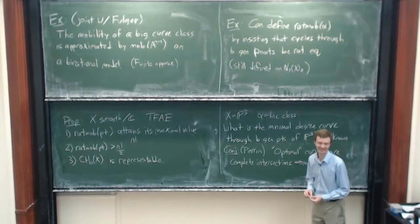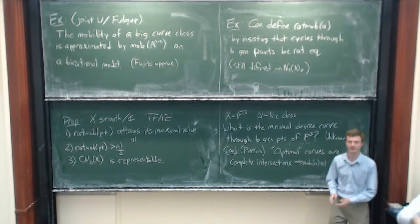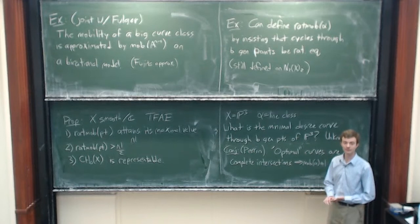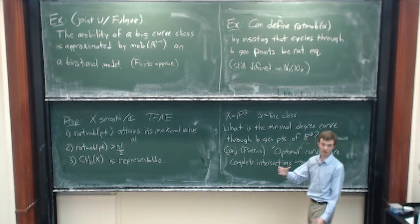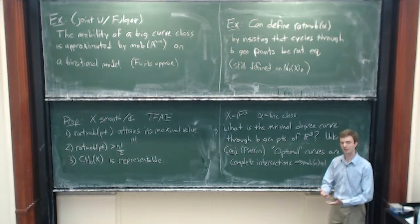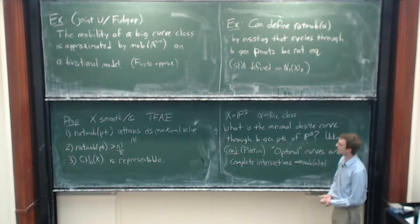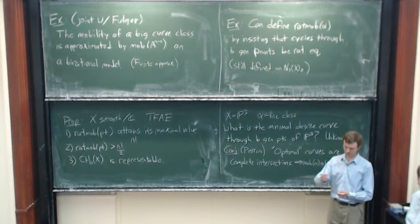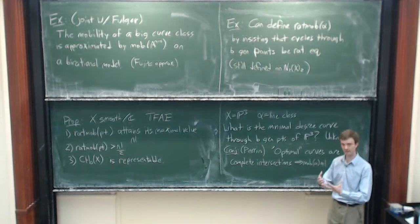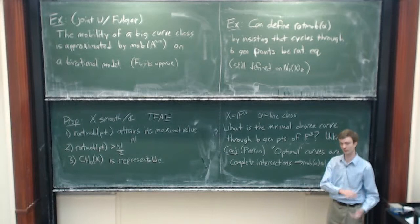A question about the nef cones: do I know what they are? The answer is no. Debarre, Ein, Lazarsfeld, and Voisin showed that the nef cone does not need to be contained in the pseudo-effective cone — very different from divisors and curves. The general philosophy is that cycles should be dual to Chern classes of vector bundles, so nefness should be a notion on Chern classes of vector bundles rather than cycles. We should be analyzing the nef class via Chern classes rather than cycle-theoretic notions of positivity.